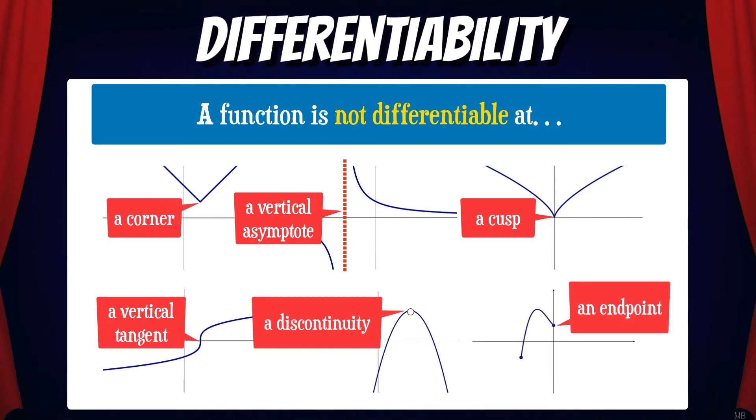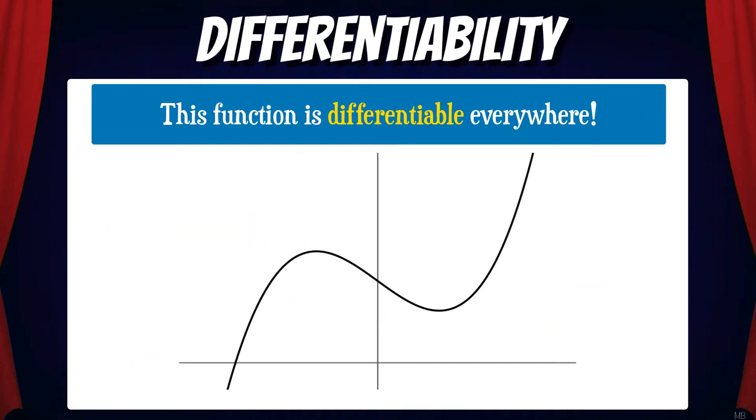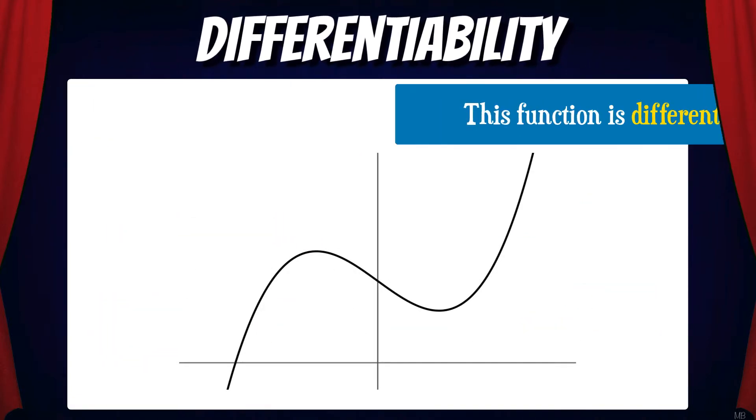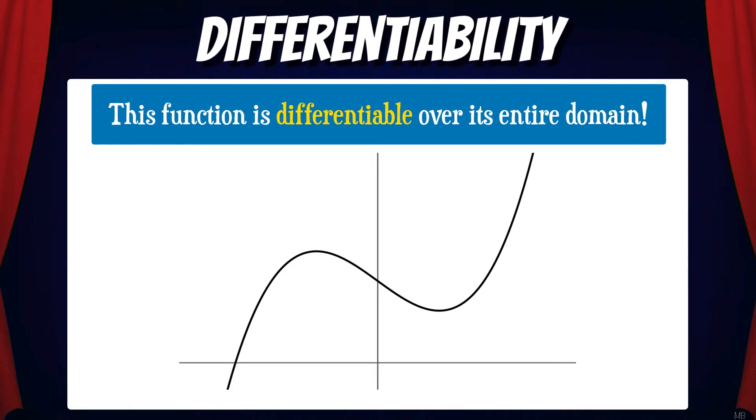For all of these cases, the derivative does not exist. Here's an example of a function that's differentiable everywhere. In other words, this function is differentiable over its entire domain. The function is smooth and continuous.